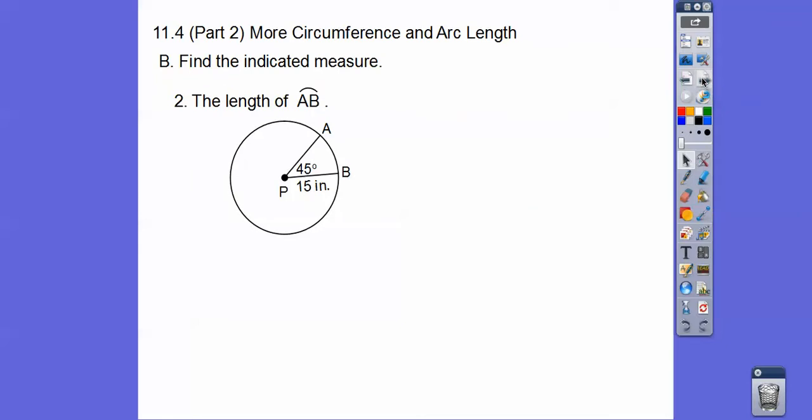This one says find the length of arc AB. So here's our formula right there. This is 45. The radius is 15. So we're looking for L. So just plug in everything right there. And as long as we do our cross-cancelling, and then the 2 goes into 8 four times, and so we get 15π over 4 inches, or when you do 15 times 3.14, divided by 4, you get about 11.78 inches on that.